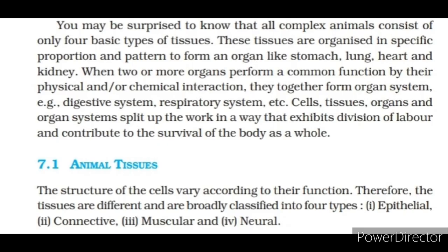All complex animals consist of only four basic types of tissues. These tissues are organized in specific proportion and pattern to form an organ like stomach, lung, heart and kidney. When two or more organs perform a common function by their physical and/or chemical interaction, they together form an organ system, for example, digestive system, respiratory system, etc. Cells, tissues, organs and organ systems split up the work in a way that exhibits division of labor and contributes to the survival of the body as a whole.